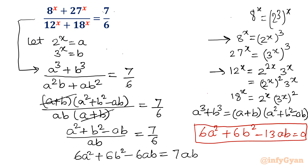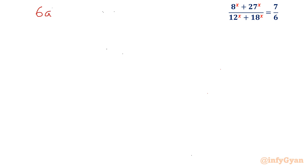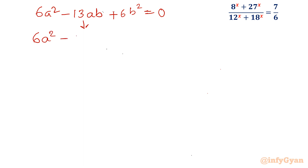Let us write it in standard form: 6a squared minus 13ab plus 6b squared equals 0. Factorization: 6 times 6 is 36, and 9 times 4 is 36, so I will split the middle term as minus 9ab minus 4ab. Check: minus 9 plus minus 4 is minus 13, and minus 9 times minus 4 is plus 36, matching 6 times 6. So the split works.